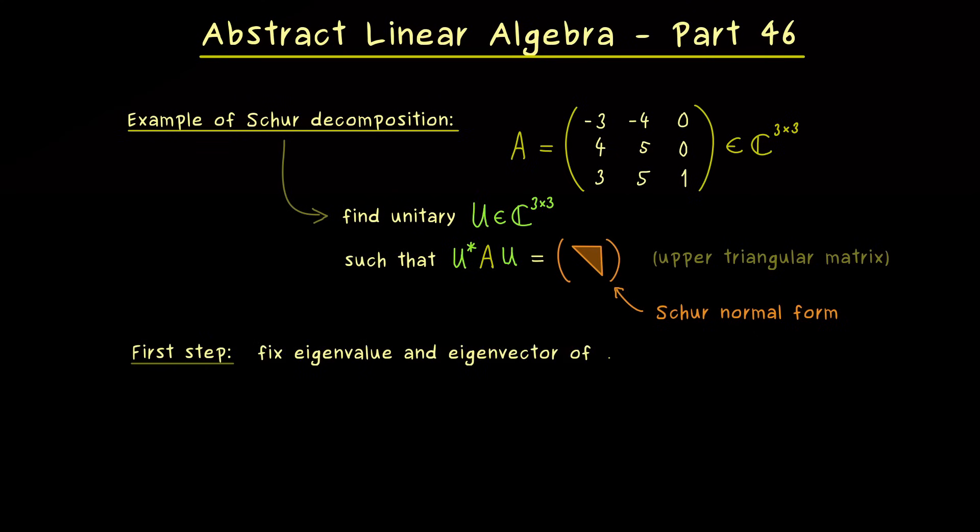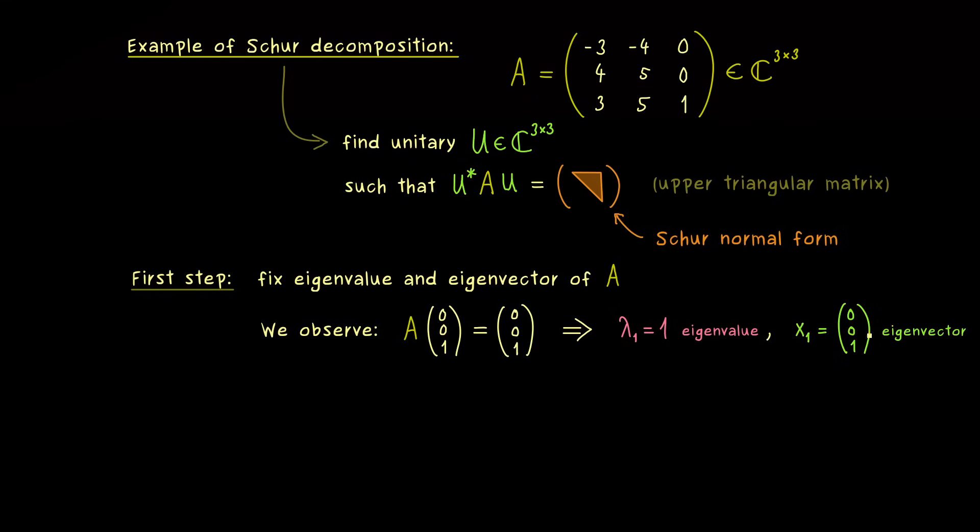So you see, it can be different than the Jordan normal form, but also here, in the best case scenario, we have a diagonal matrix. Indeed these are really important cases, but we will discuss them in the next video. Here we just start with the algorithm. In the first step we just fix an eigenvalue and an eigenvector of our matrix A. And in fact it's really easy to see if we apply the vector 0, 0, 1 to the matrix A, then we get out the third column which is the same vector. Which means it's an eigenvector associated to the eigenvalue 1. So let's call the eigenvalue lambda 1 and the eigenvector x1. And here it's important that we normalize the eigenvector such that it has length 1. This is already the case here.